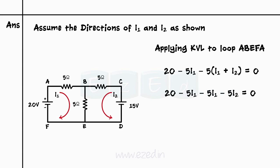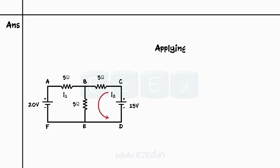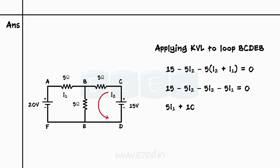Rearranging the terms, we get the first equation as 10 I1 plus 5 I2 equals 20. Applying KVL to loop BCDEB, we get 15 minus 5 I2 minus 5 into I2 plus I1 equals 0. Rearranging the terms, 5 I1 plus 10 I2 equals 15.